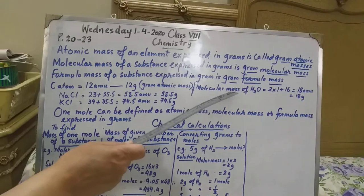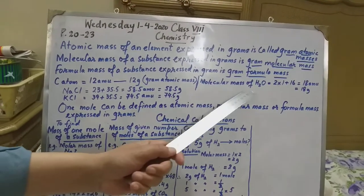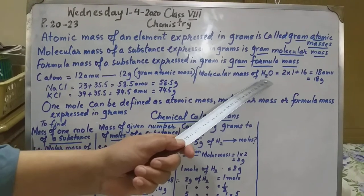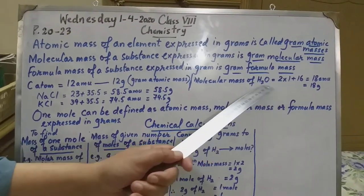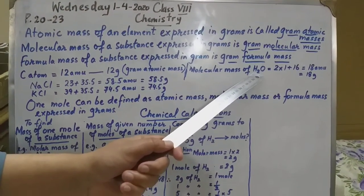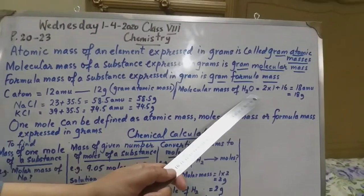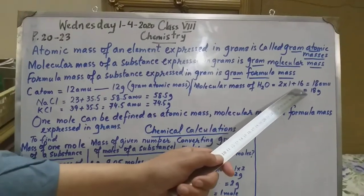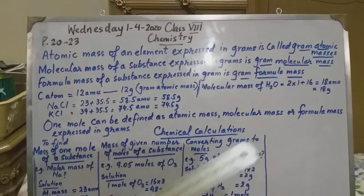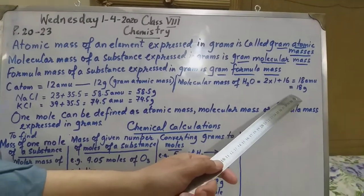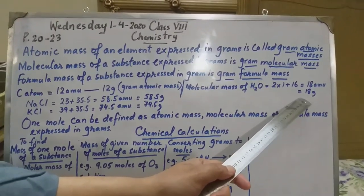Misal ke taur pe, jahaan pe dekhen, molecular mass of water. Water jo hai wo molecule ki shakal mein hai, H2O. To yeh haan pe two times one. One jo araha hai iski atomic mass hydrogen ka hai. Chunki yeh hai 2 atom, isliye 2 se multiply kar rahe hain. Aur oxygen ka sixteen hai to isliye add kar rahe hain aur isliya 18 atomic mass unit aata hai aur iska jo molecular mass jo banta hai is 18 grams.